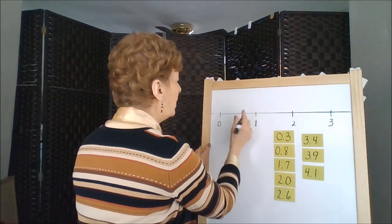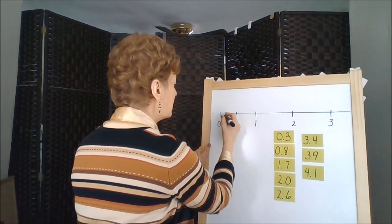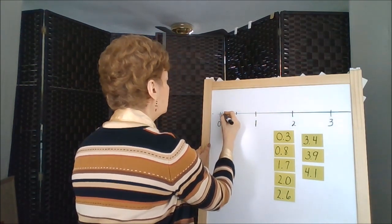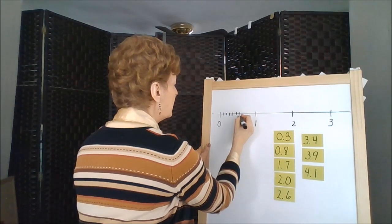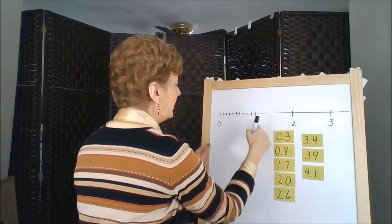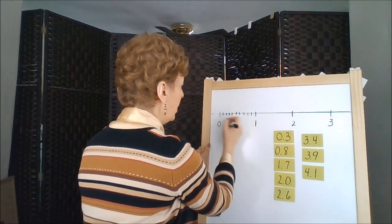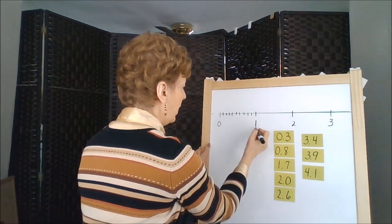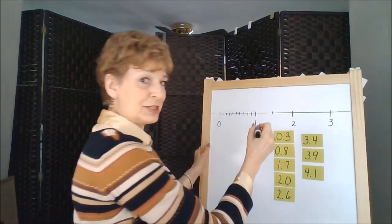Within the decade, there are basically 10 smaller segments. One, two, three, four, five, six, seven, eight, nine, and then the one would be the ten. So there would be 10 of 10 marks, 10 jumps to get from zero to one.